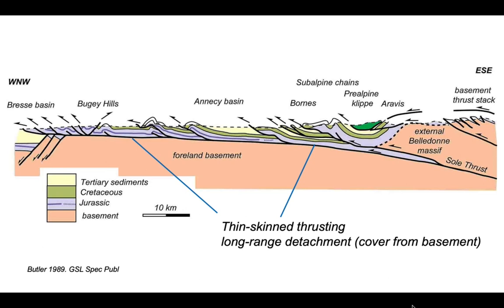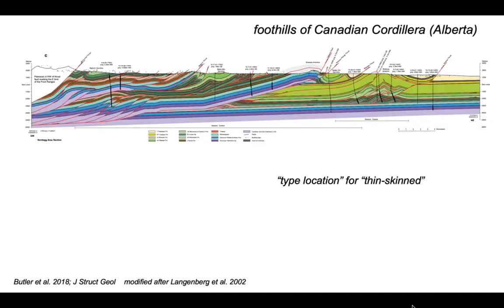This is the thin-skinned thrusting model and its type location for many people is this area represented on this cross-section through the foothills of the Canadian Cordillera in Alberta. The demonstration of this style of tectonics probably goes back to the work of Bert Bally and others in the 1960s and the early acquisition of seismic reflection data through thrust belts. They recognised that the basement structure continued beneath the thrust belt and was apparently undeformed, even though the surface structure is highly complicated and involves a lot of deformation.